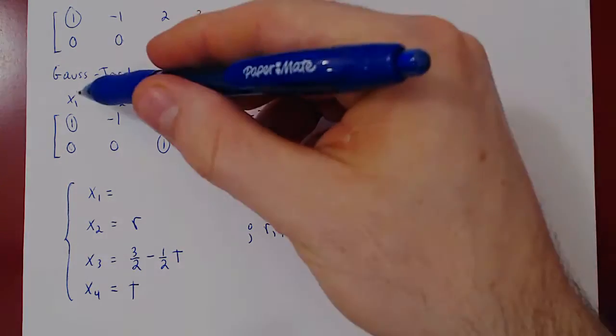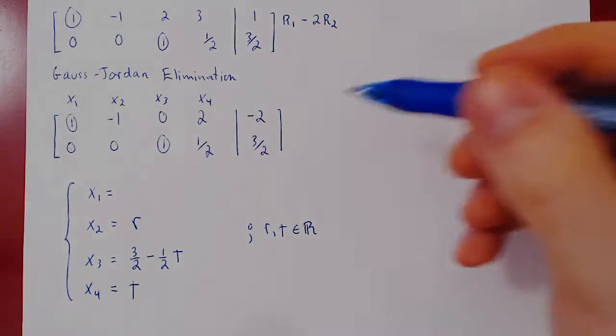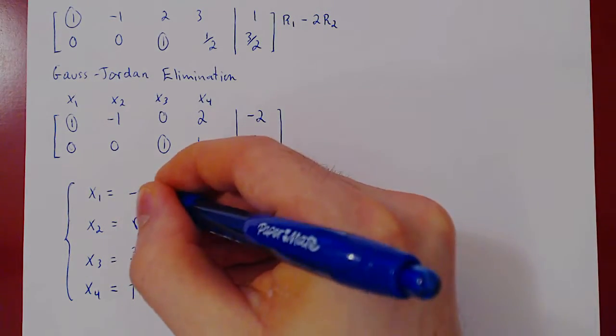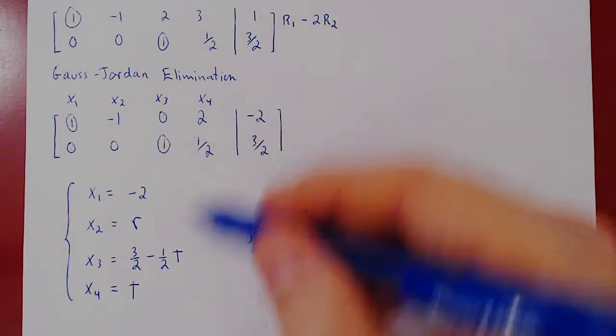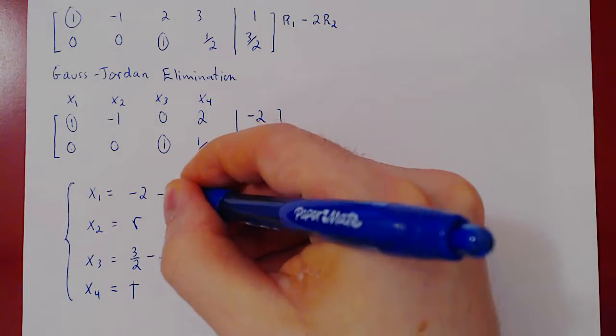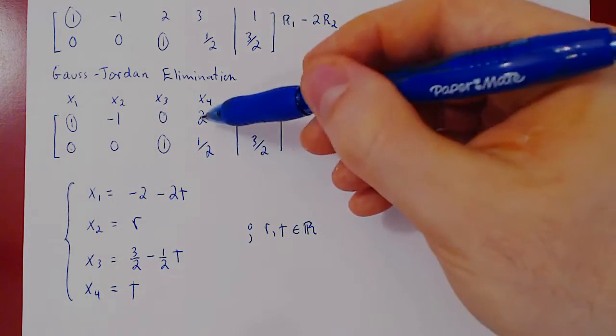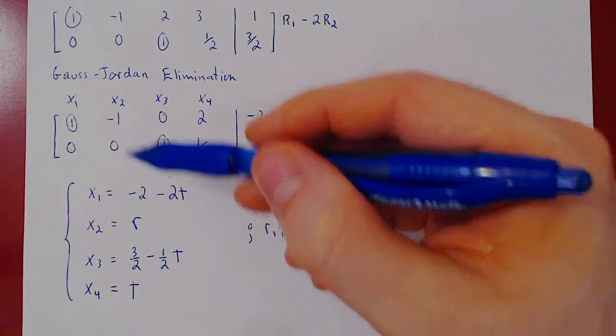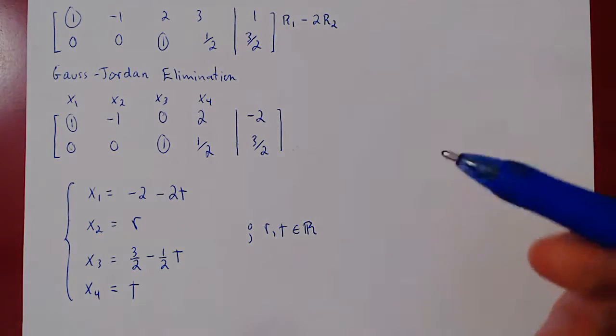We can now solve for x1 using its corresponding leading one. So x1 equals negative 2. There's a 2x4, which is a 2t, on the left. On the right it becomes a negative 2t. And there's also a negative x2, which is a negative r. On the right becomes a positive r.